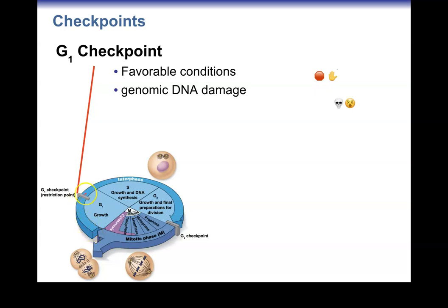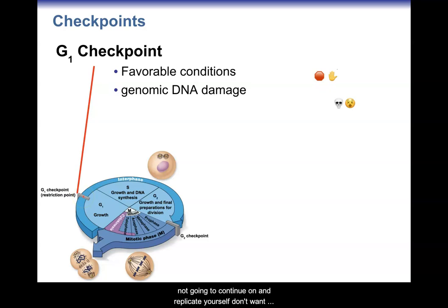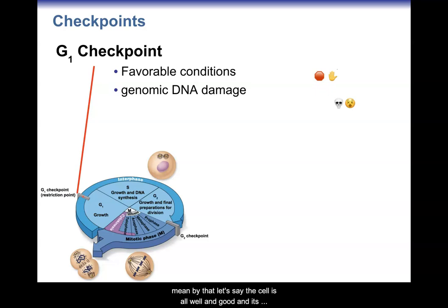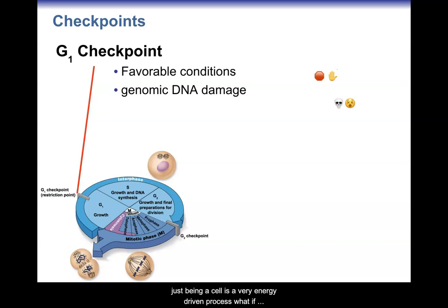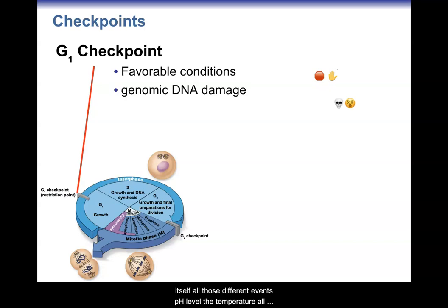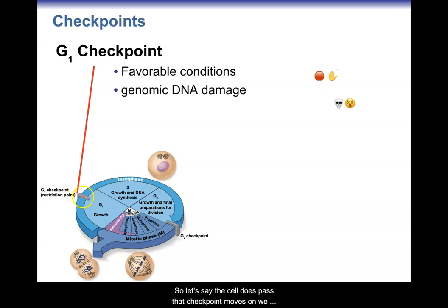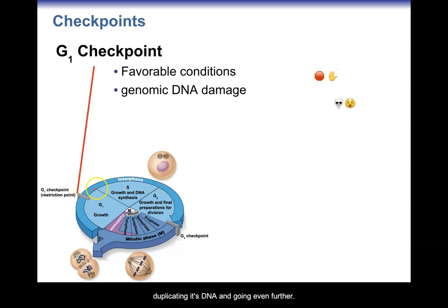The checkpoint lets the cell stop — if DNA is not okay, the cell will not continue on and replicate itself. You don't want to spend that energy, time, and resources on a damaged cell. Favorable conditions also matter: even if DNA is fine, if there aren't enough nutrients, signaling, or if pH and temperature are off, the cell will not move forward. If the cell passes the G1 checkpoint, it continues with G1 growth and then hits S phase. That checkpoint really prevents the cell from duplicating its DNA and going even further if conditions aren't right.